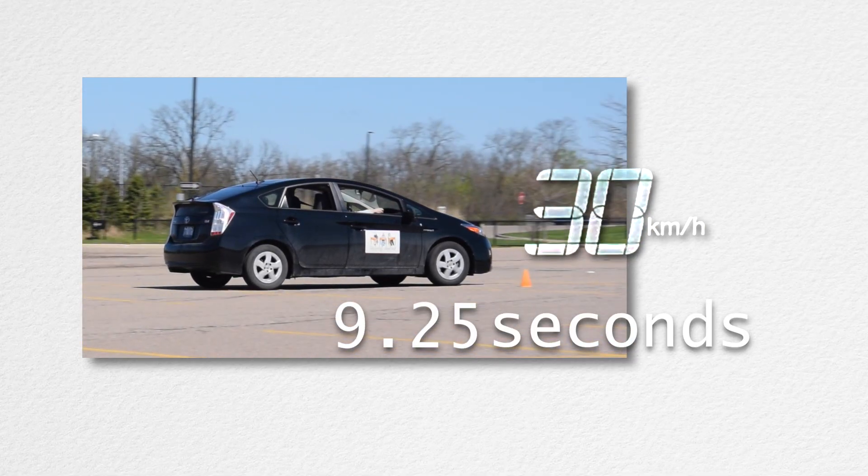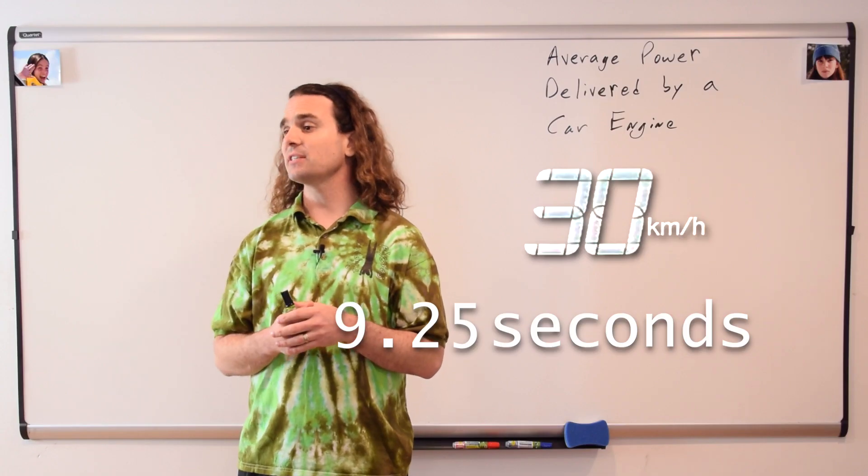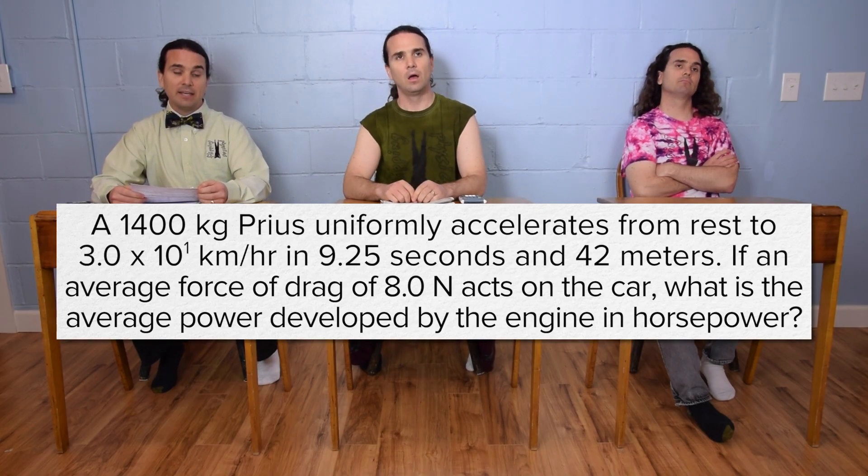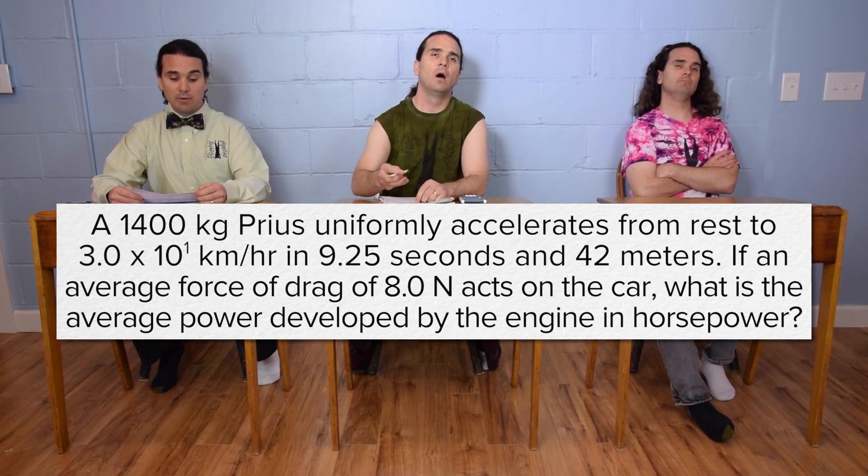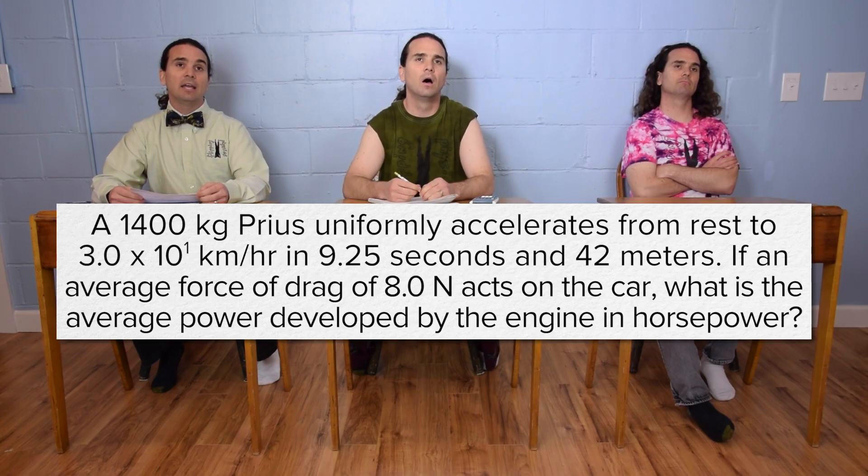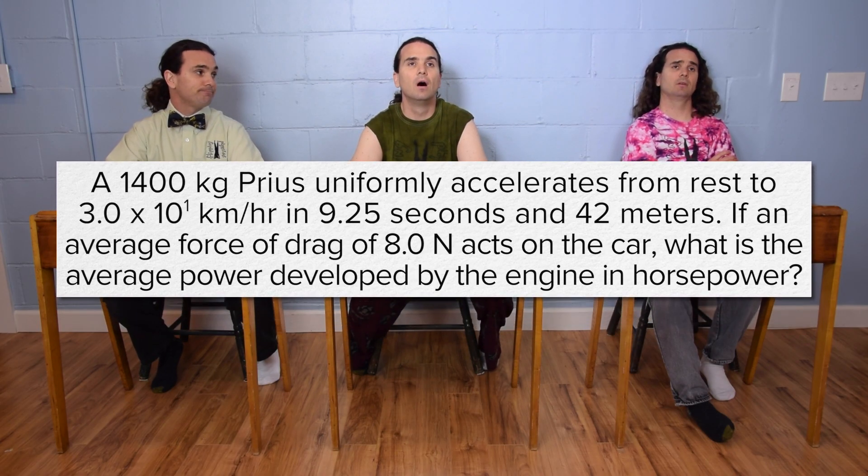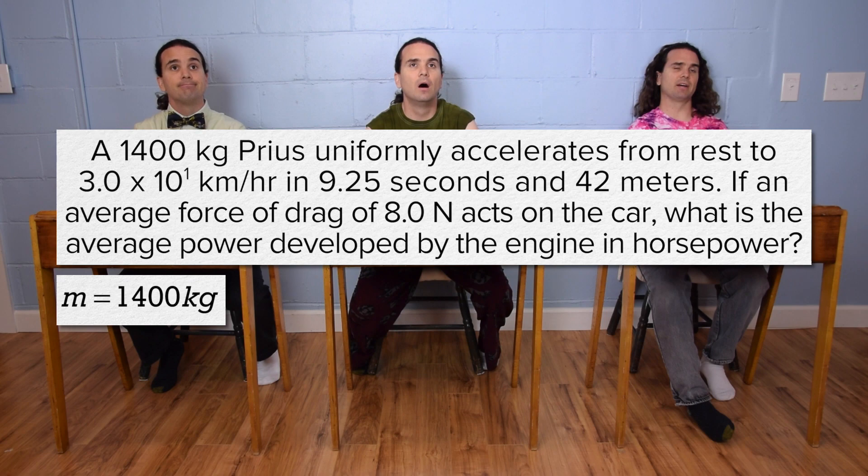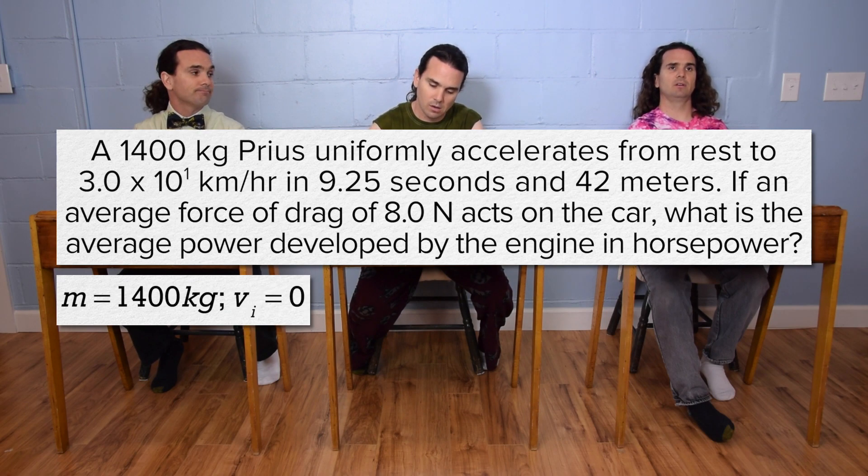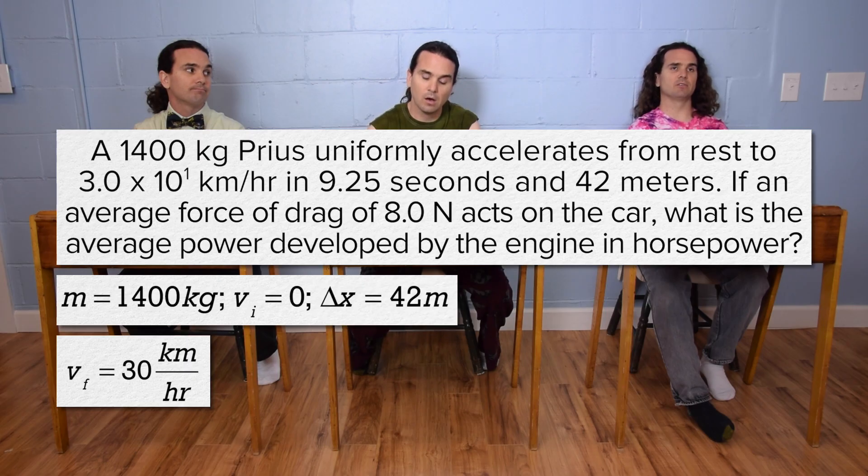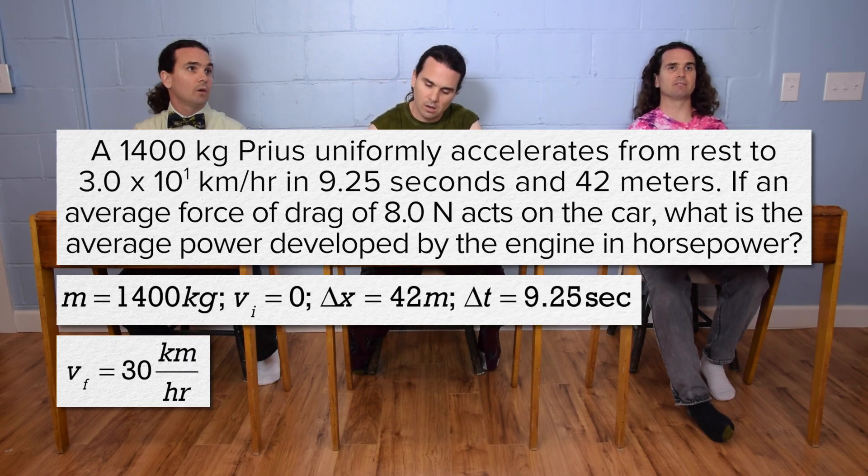Billy, could you please read the problem and Bo, could you please translate? A 1,400 kilogram Prius uniformly accelerates from rest to 3.0 times 10 to the first kilometers per hour in 9.25 seconds and 42 meters. Mass equals 1,400 kilograms, initial velocity is zero, final velocity is 3.0 times 10 to the first kilometers per hour, displacement is 42 meters and change in time is 9.25 seconds.